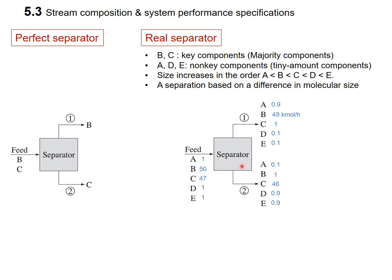Here is the real separator. In this case, we have 5 components in a feed stream introduced into the real separator. B and C are key components, or majority components. The unit is kilomol per hour. B is 50 kilomol per hour, C is 47 kilomol per hour. The other non-key components — A, D, and E — are tiny amount components, just 1 kilomol per hour each. So they are minority components; maybe they are impurities.